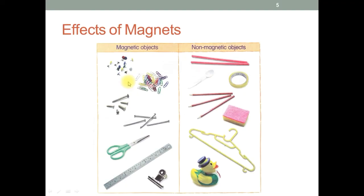From the given table, you can see the objects which get attracted towards the magnet. They are called magnetic objects. For example, drawing pins, file clips, screws, iron nails, scissors, metallic ruler, and file holder.